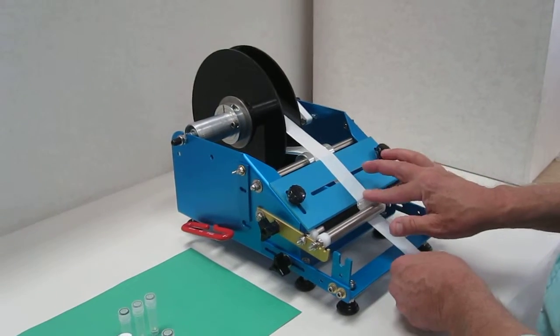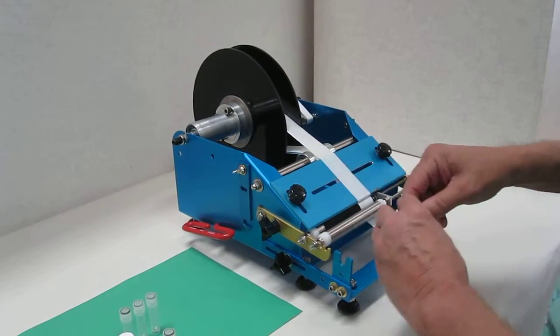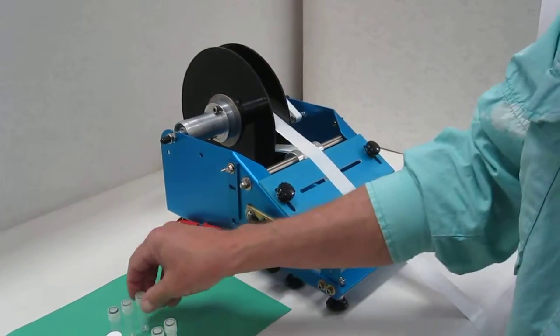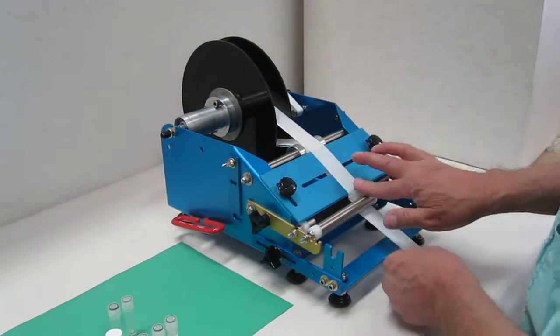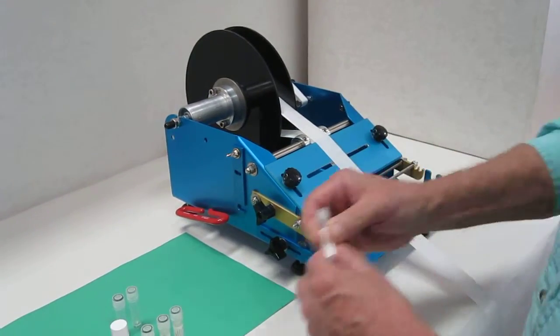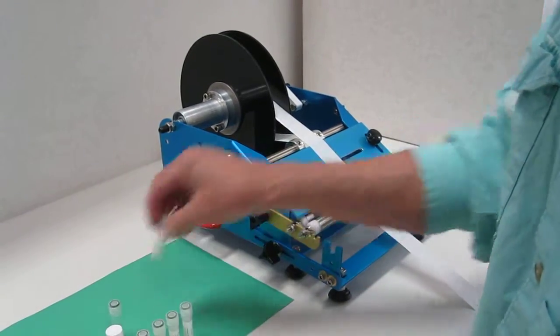The twist-on cap has a larger diameter than the vial itself, making the label application very difficult. A custom roller assembly eliminates the problem and makes label application fast, precise, and easy.